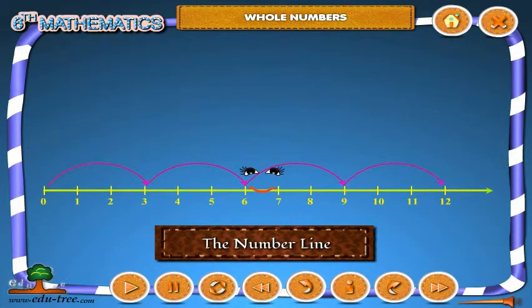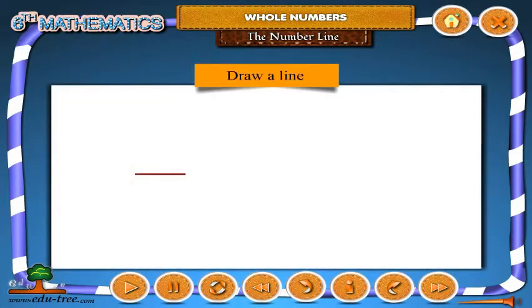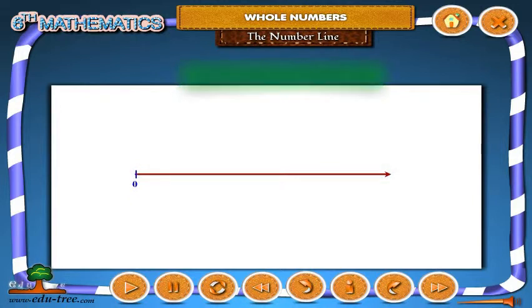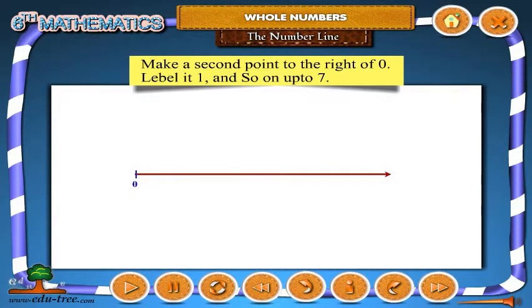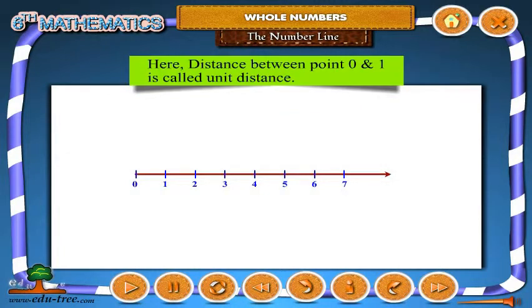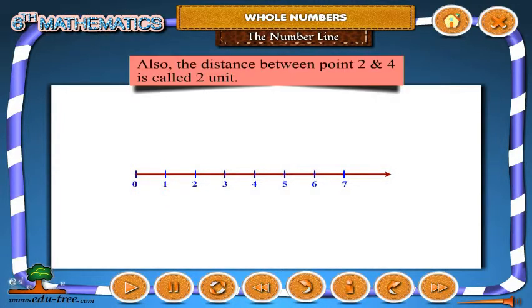The number line. Draw a line, mark a point on it, label it 0. Make a second point to the right of 0, label it 1, and so on up to 7. The distance between point 0 and 1 is called a unit distance. Also, the distance between point 2 and 4 is called 2 units.